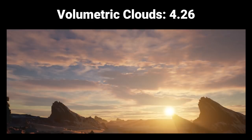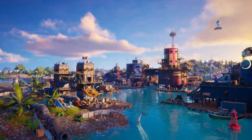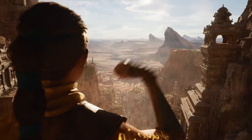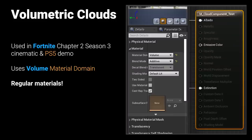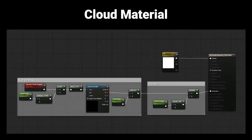Another exciting new feature coming in 4.26 is volumetric clouds, accessible to GitHub users via dev rendering. The volumetric cloud system was used in the Fortnite Chapter 2 Season 3 cinematic and the PlayStation 5 demo alongside Nanite rendering technology. The volumetric clouds use the material domain called volume, letting users specify clouds with a standard material interface. A basic cloud material has cloud mask logic going into the extinction pin — mapping a tiling 2D texture across the sky, subtracting a bias, and multiplying by a density parameter.